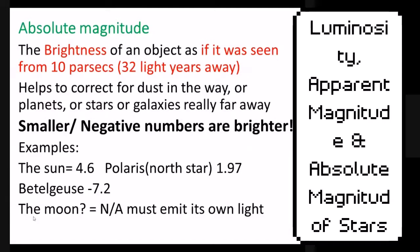One thing to point out about absolute magnitude: the moon does not emit its own light, so it does not have an absolute magnitude. In order for an object to be considered as having an absolute magnitude, it has to emit its own light. A light bulb would have an absolute magnitude — a really large positive number. A star emits its own light, so it counts. A planet does not emit its own light, so it does not count for absolute magnitude.